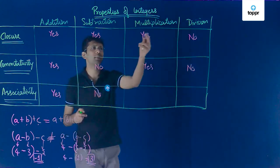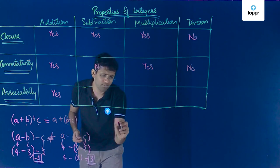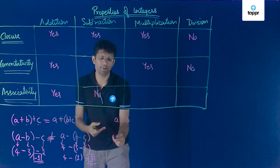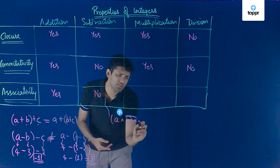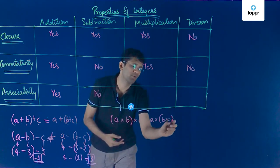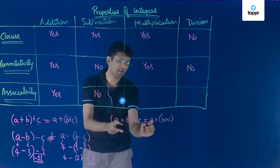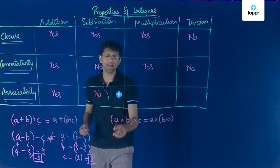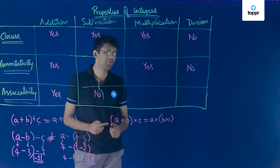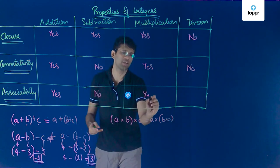Let us now check if multiplication is associative for integers. For associativity we check if (a × b) × c = a × (b × c). For any three integers you take, this property always holds, so we can say that multiplication follows the associativity property.